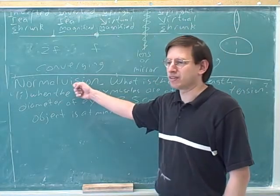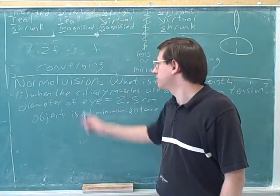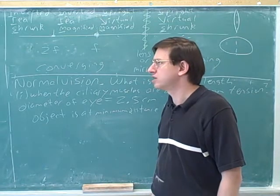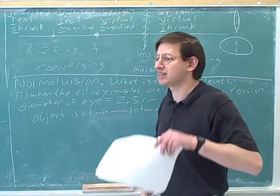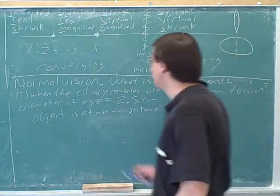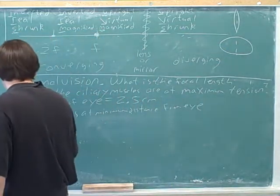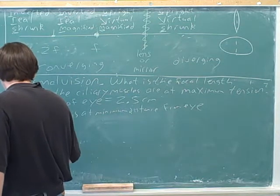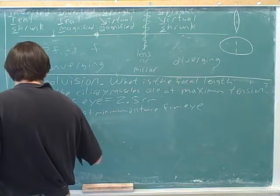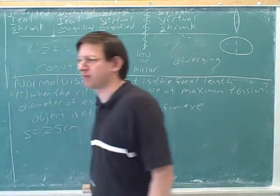Is it 25 centimeters? Yeah, this is where it comes in that this is normal vision. So we learned in our last session that normal vision has what's called a near point of 25 centimeters. Yeah, I think that is the right number. Okay. So the normal near point is 25 centimeters. That means that our object distance here is 25 centimeters.